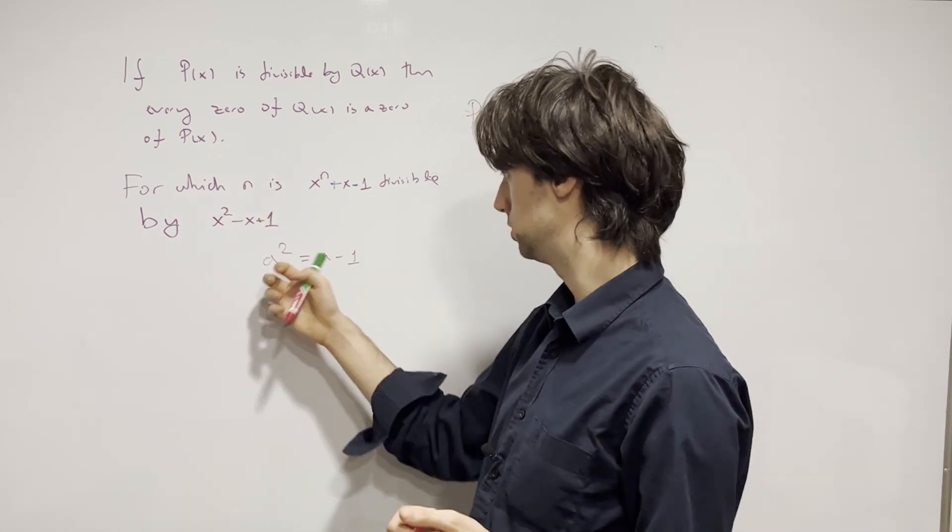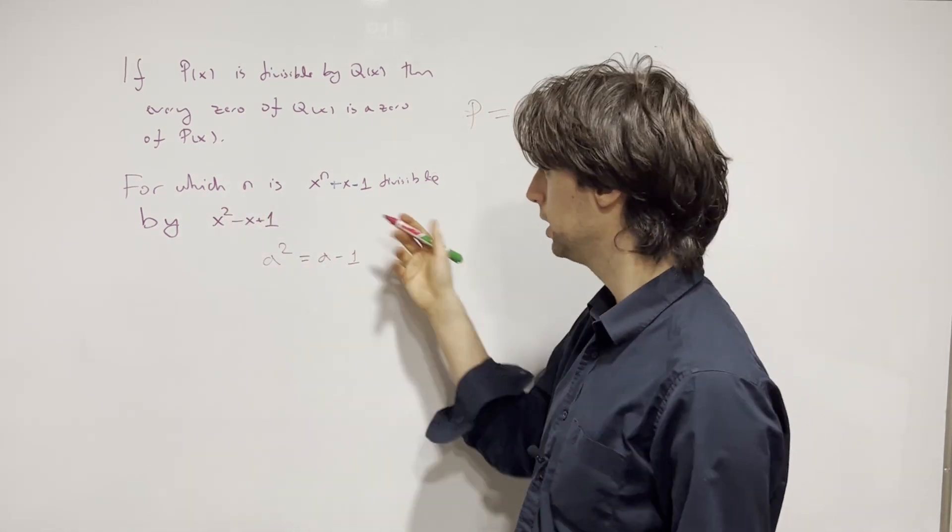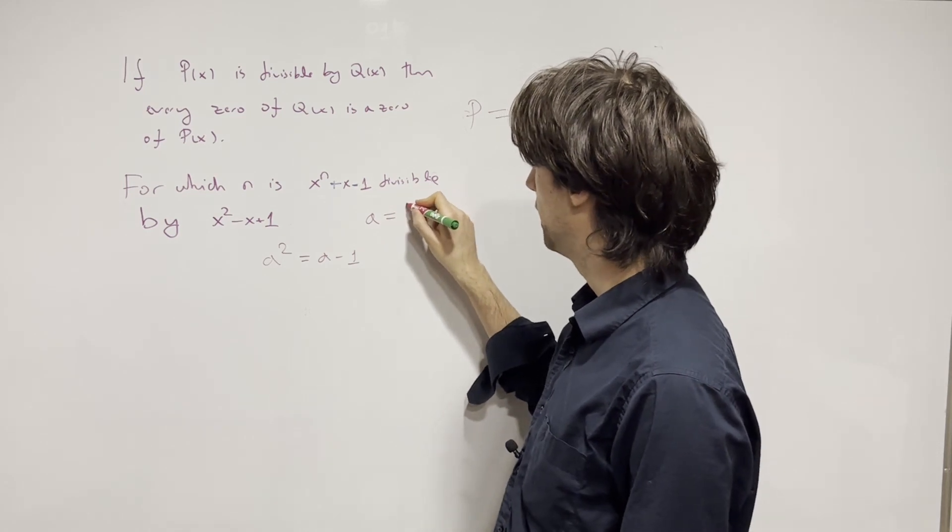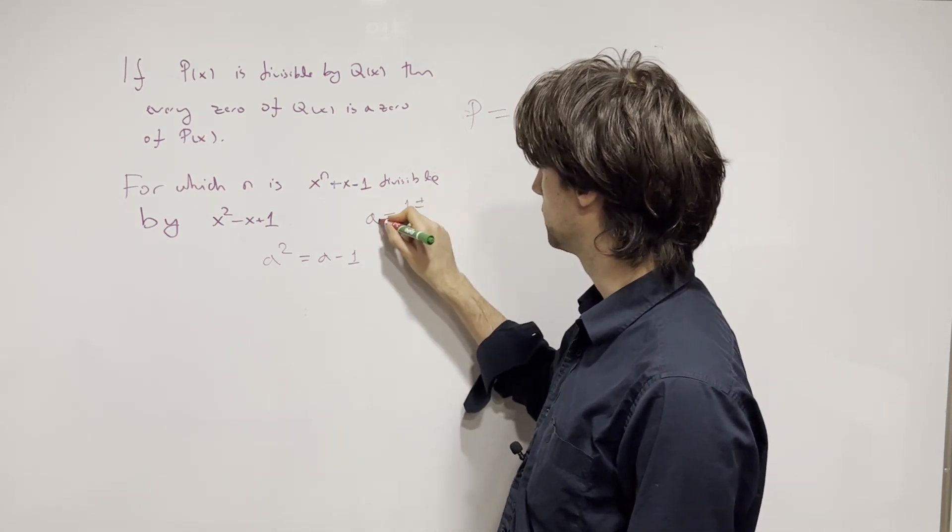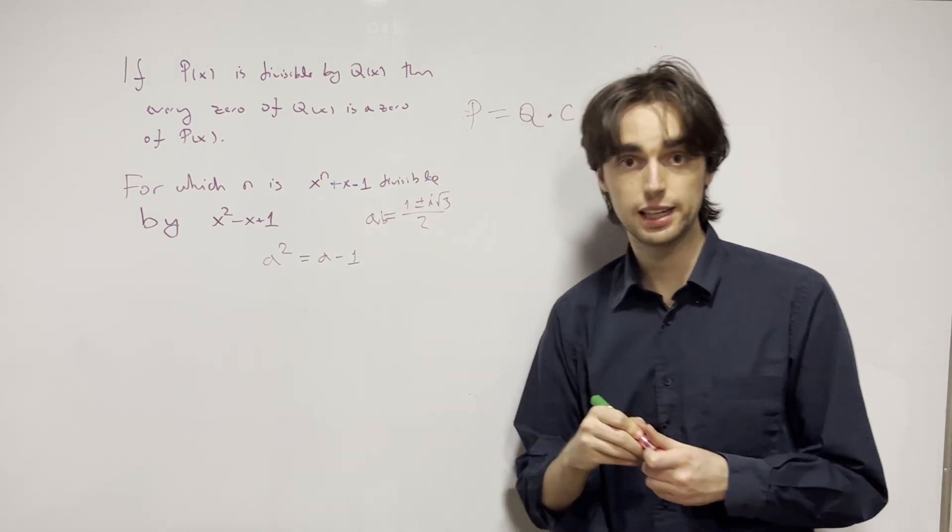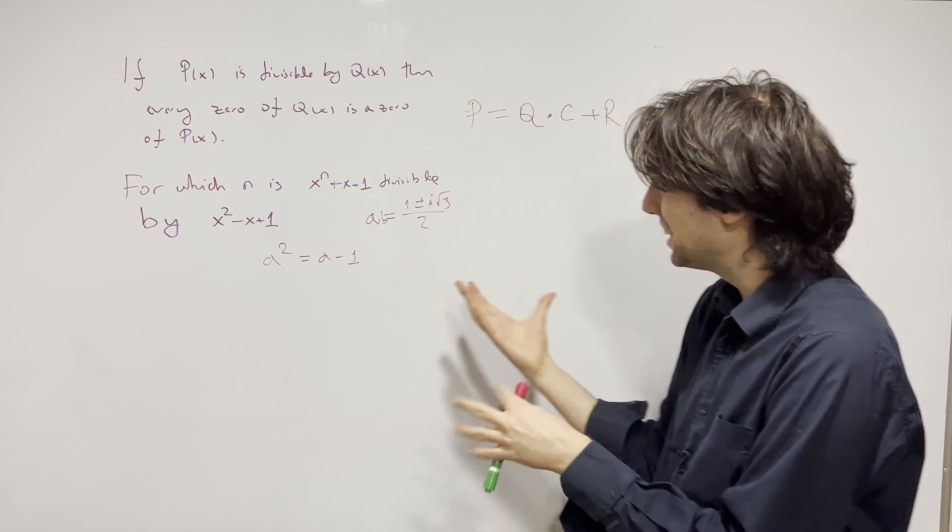The zeros are actually a equals one plus or minus i times square root of three over two. Now, when I first saw this, complex numbers were scary to me.